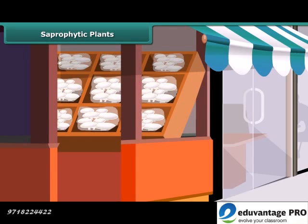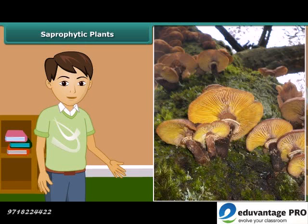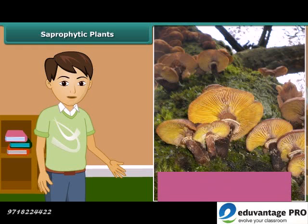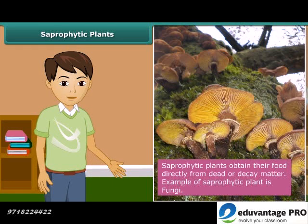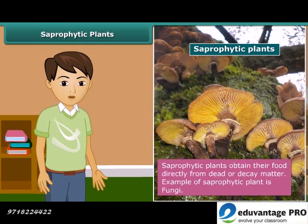When you go to a vegetable shop, you might have seen packets of mushrooms. You may have also seen fluffy umbrella-like patches growing on rotting wood during rainy season. These organisms are commonly called fungi, and they get their nutrition from dead and decaying matter. They secrete digestive juice and convert it into a solution. This mode of nutrition, in which organisms take in nutrients in solution from dead and decaying matter, is called saprotrophic nutrition, and organisms which use this mode are called saprotrophs. Thus, fungi are saprotrophs.